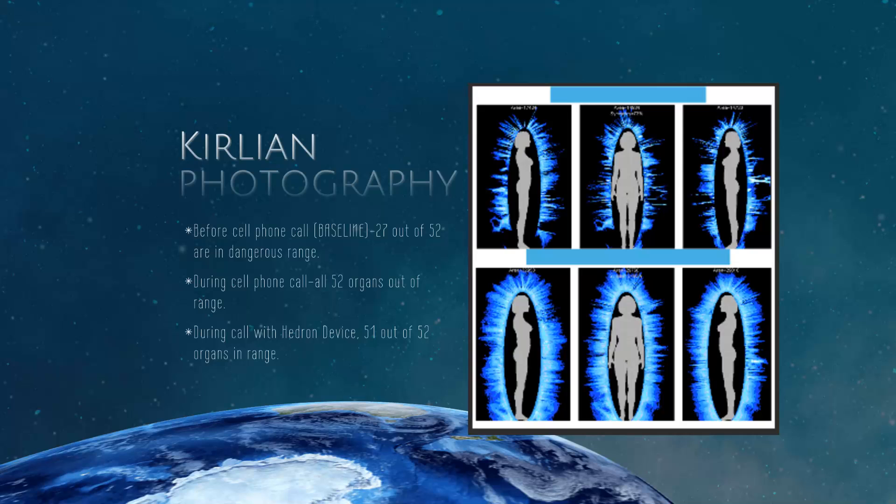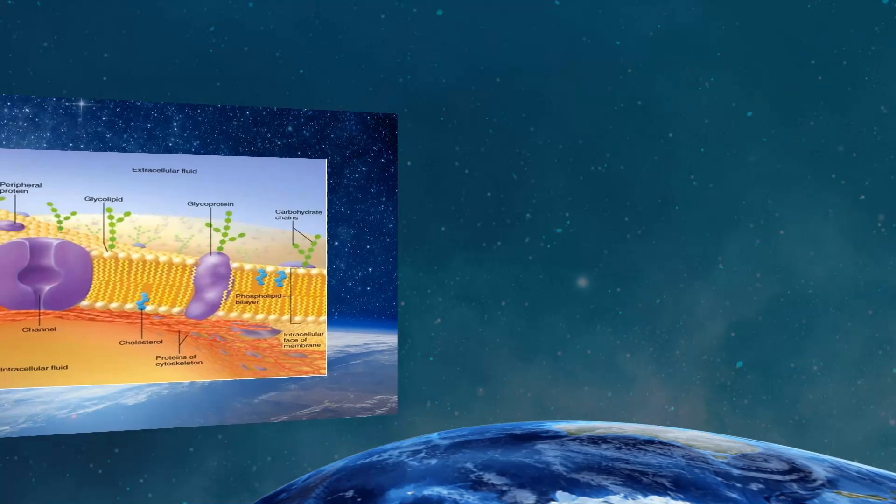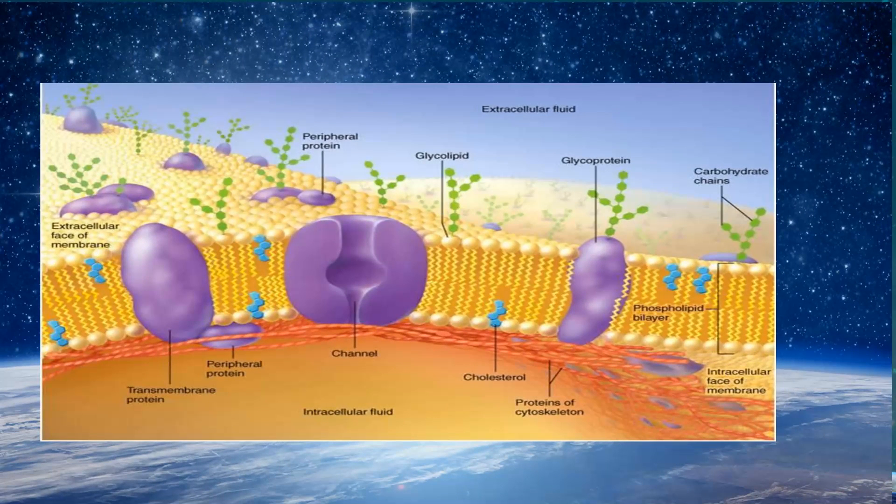Well, you have something called cellular permeability. That is when the nutrients come in the cell and you detoxify the waste of the cell out of the cell. That's a naturally occurring process. But when you cause chaos in the cell via the electromagnetic frequency coming in, that locks the DNA.